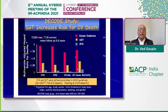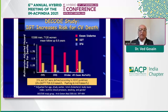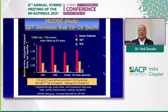The DECODE study looked at impaired fasting glucose or impaired glucose tolerance and examined cardiovascular disease complications — coronary artery disease, stroke, or all-cause mortality. You can see that with impaired fasting glucose and impaired glucose tolerance, there is already an increased cardiovascular death.